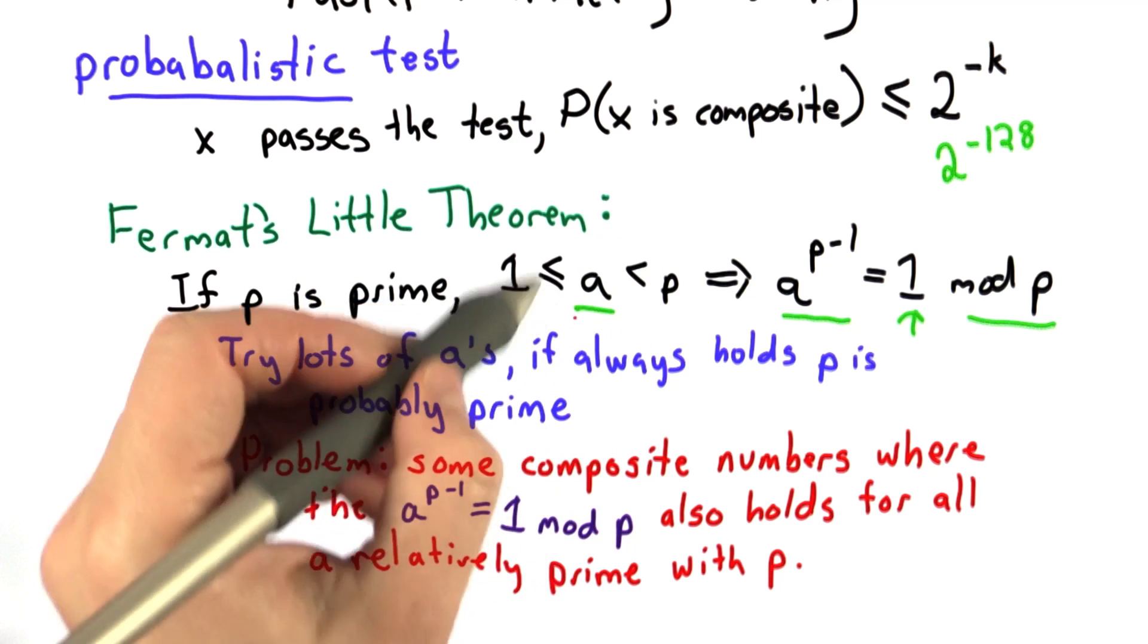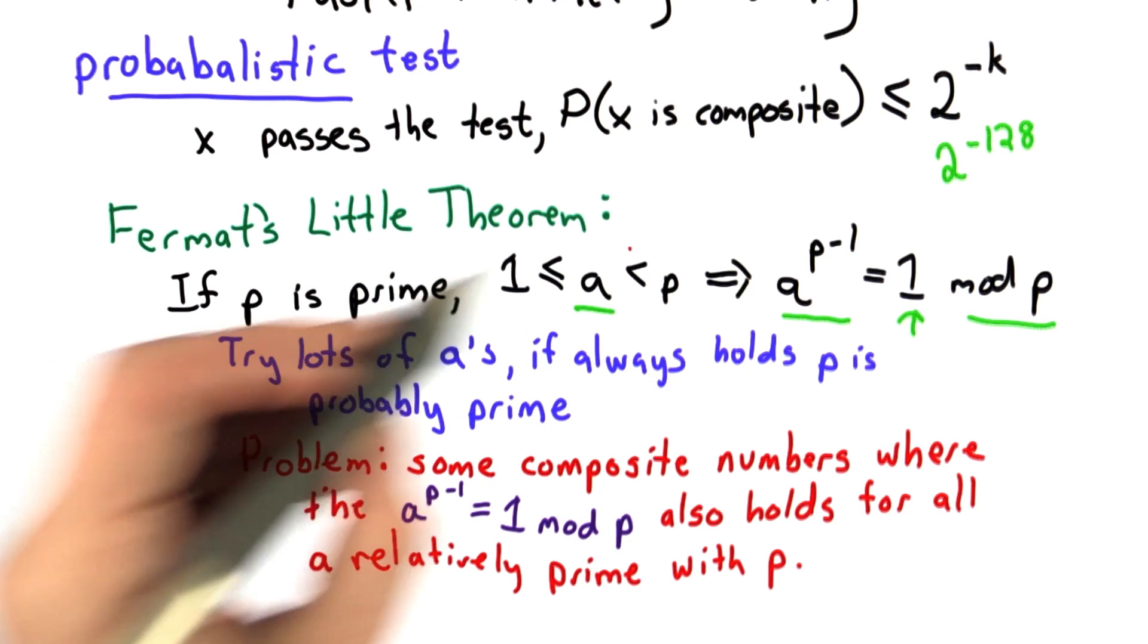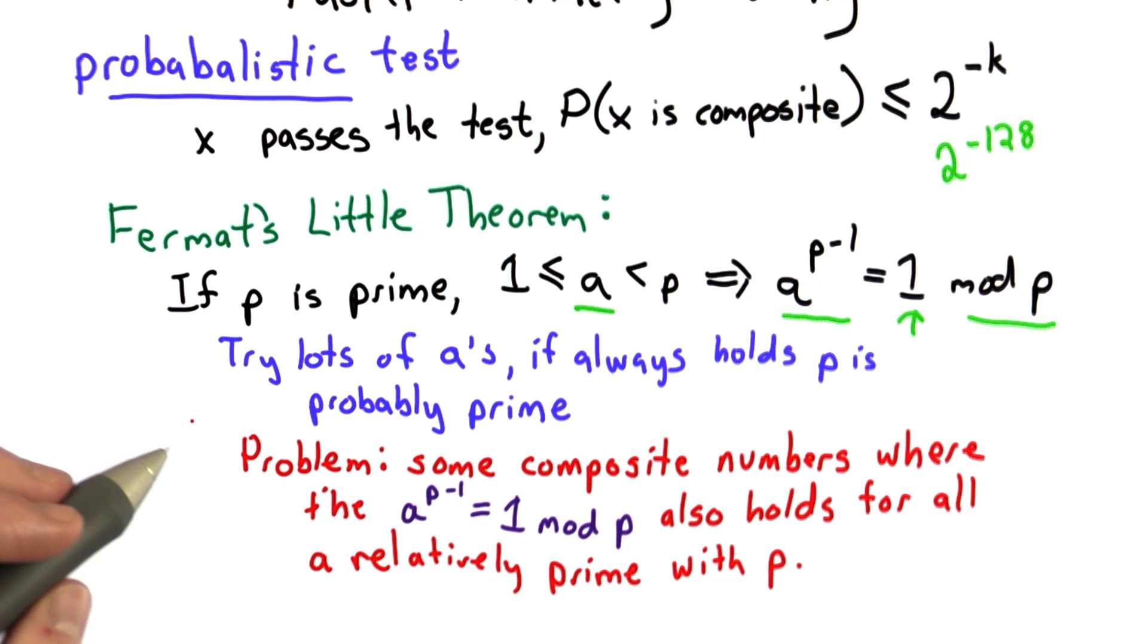So unless we try all the a numbers between 1 and p, there's a high probability that this will always hold. If we need to try them all, well this test isn't fast enough. It's still going to be exponential in the size of p.